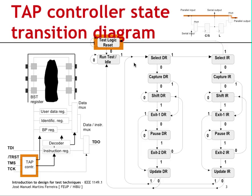There are basically two types of states in this diagram. Stable states are where we can remain for as many test clock cycles as needed — for example, if test mode select is held at zero, we remain in the run test idle state indefinitely. On the other hand, there are states where we can only remain for one clock cycle, such as select data register. At the next rising edge of TCK you will either go to select instruction register if TMS is 1, or to capture data register if TMS is 0.